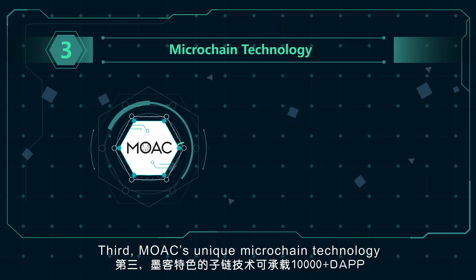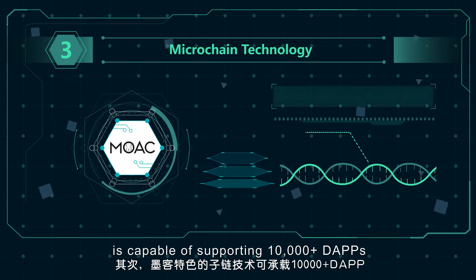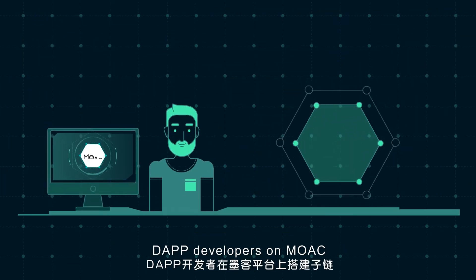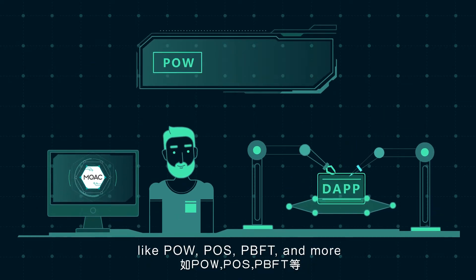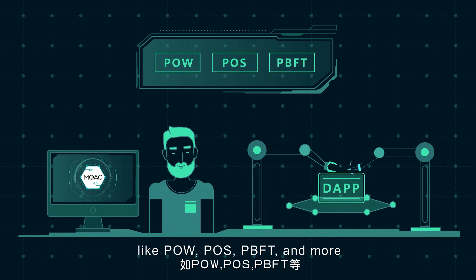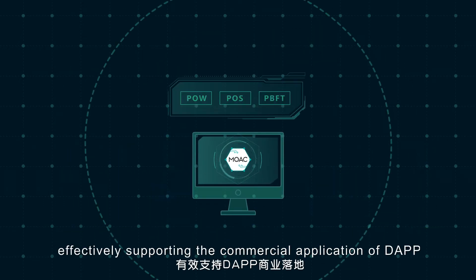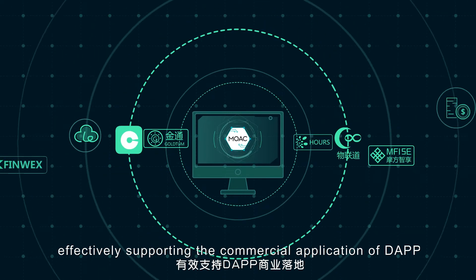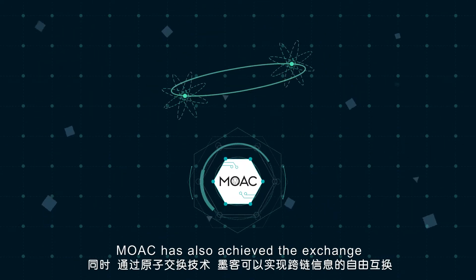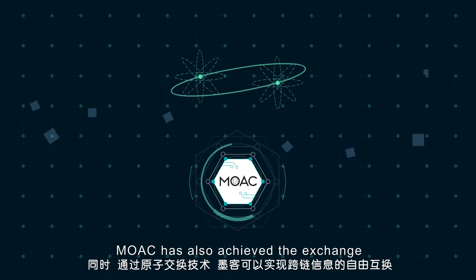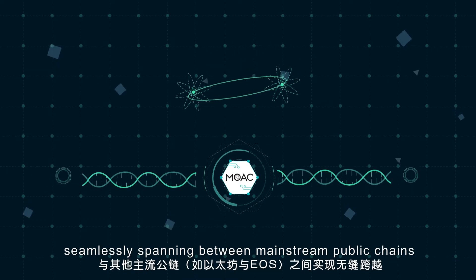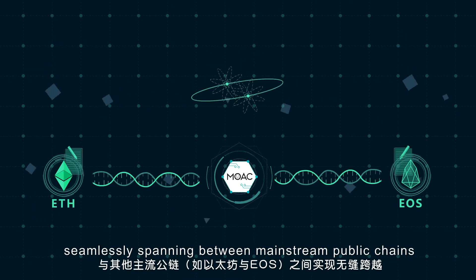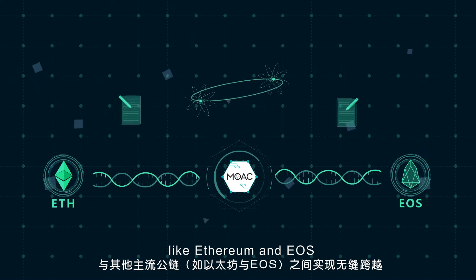Third, Moac's unique microchain technology is capable of supporting 10,000-plus D-apps. D-app developers on Moac can choose multiple consensus methods like POW, POS, PBFT, and more, effectively supporting the commercial application of D-app. Moac has also achieved the exchange of cross-chain information through its atomic exchange technology, seamlessly spanning between mainstream public chains like Ethereum and EOS.